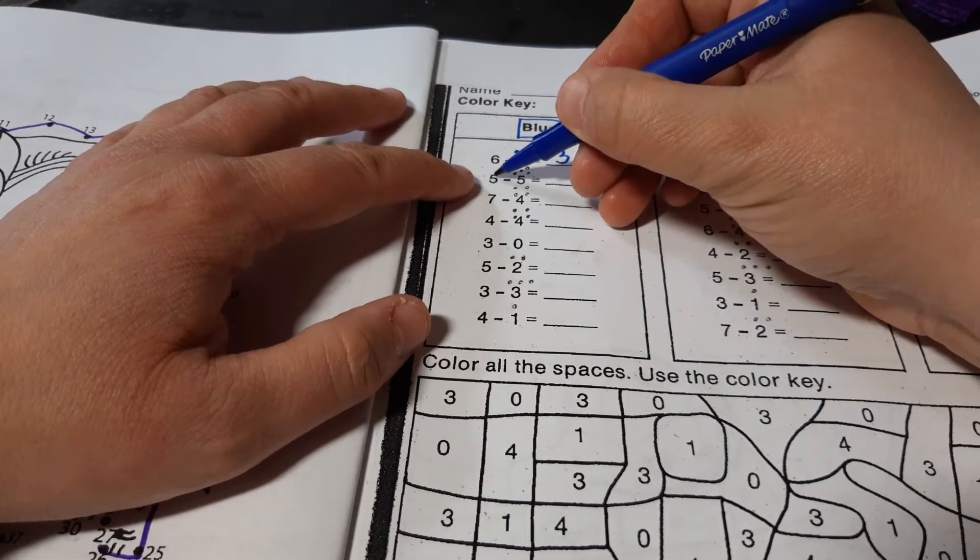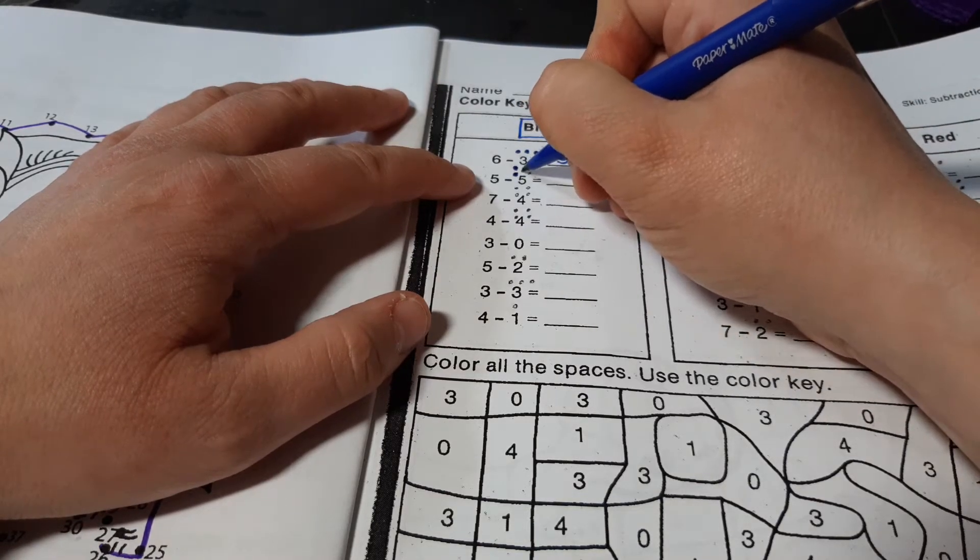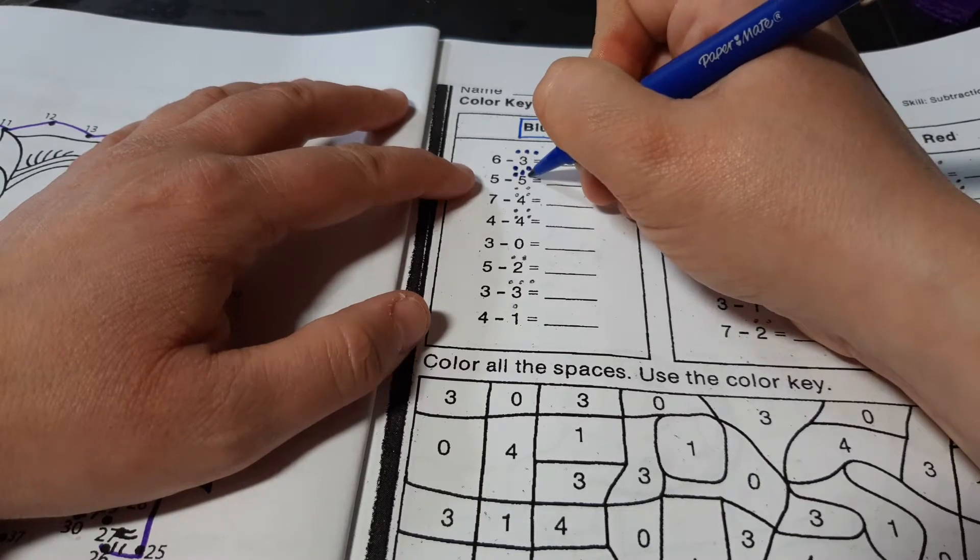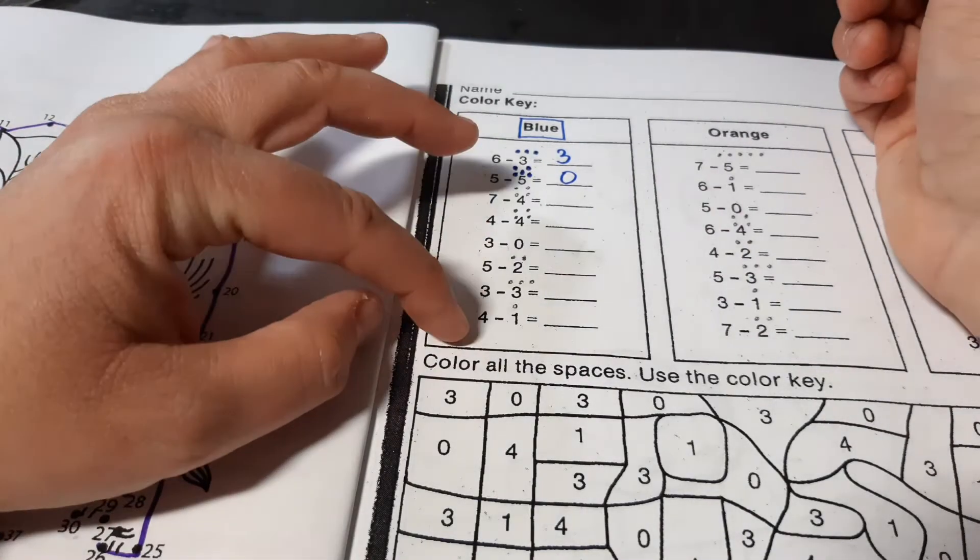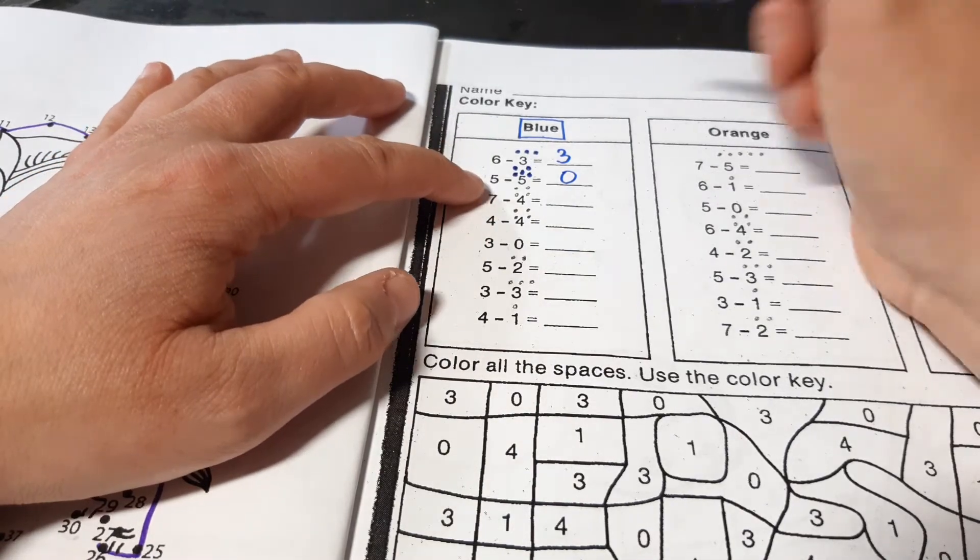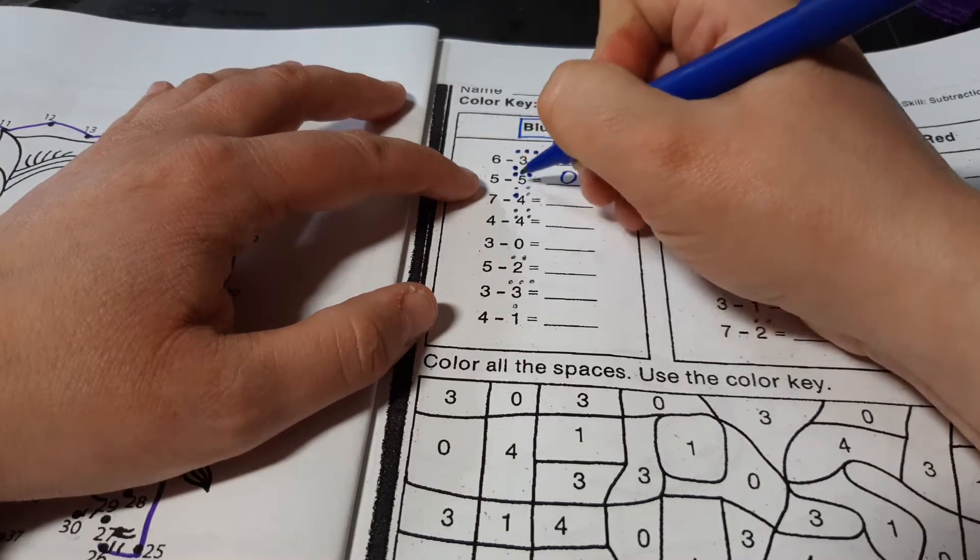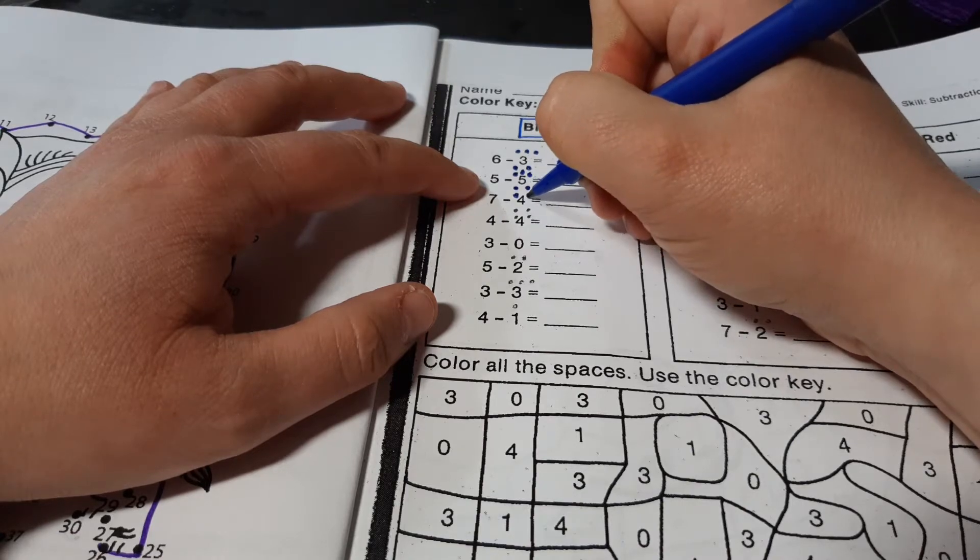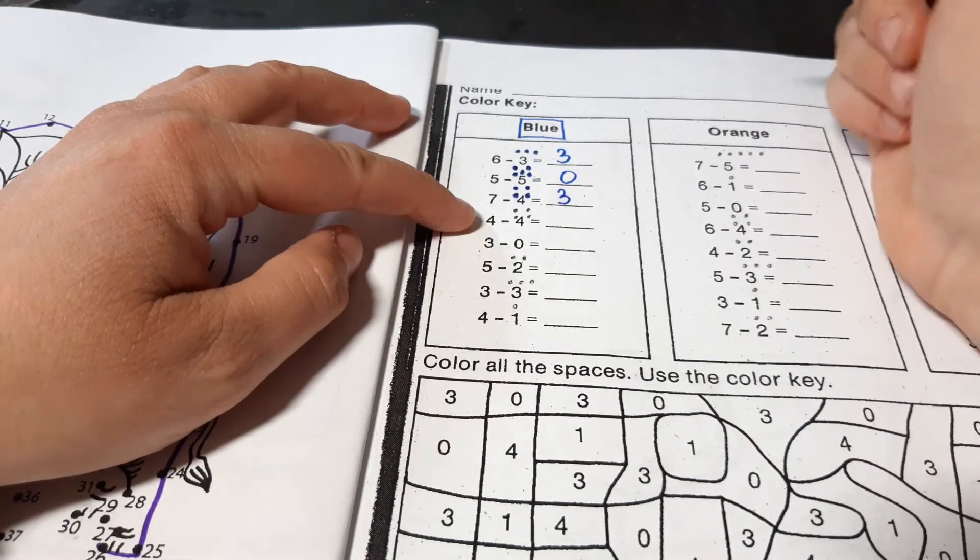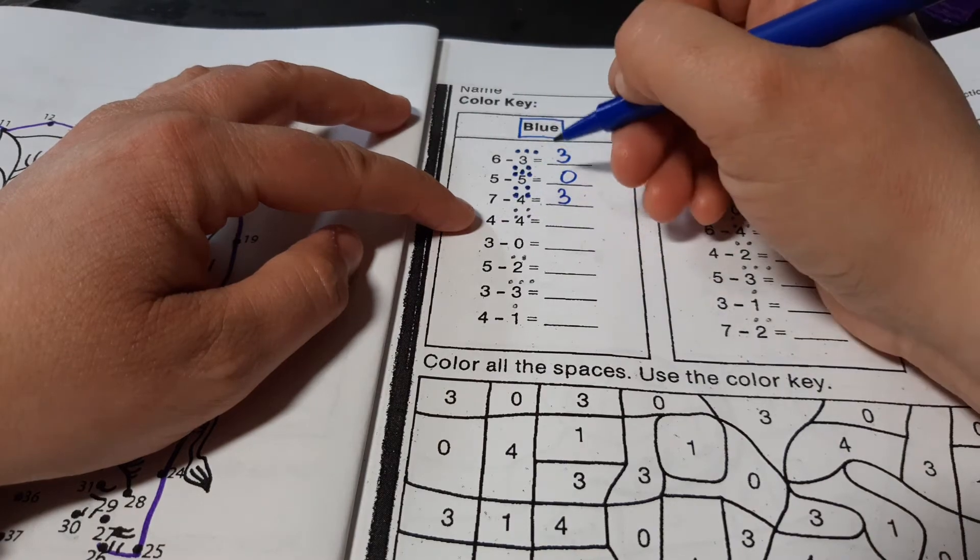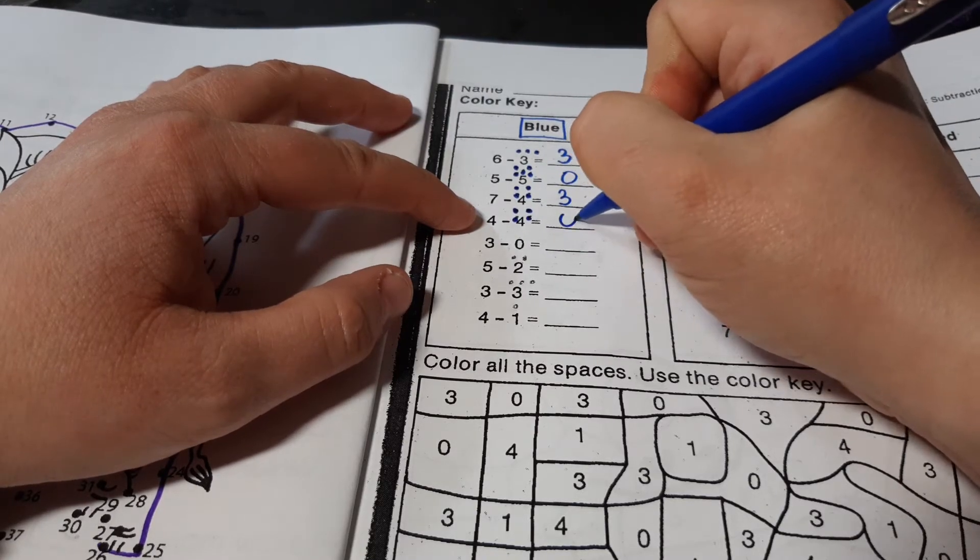Here I have 5 minus 5. So, 5, 4, 3, 2, 1, 0. Okay. We have 7 minus 4. 7, 6, 5, 4, 3. 3 is my answer. Now we have 4 minus 4. 4, 3, 2, 1, 0. Okay.